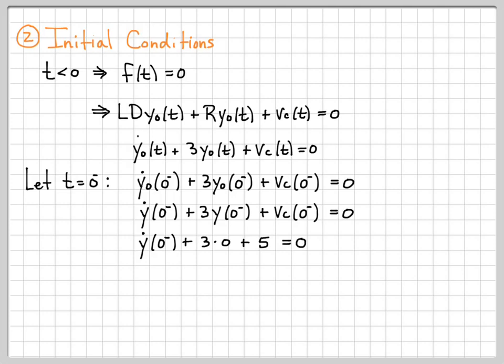So now I have this equation, which tells me if I solve for the derivative of my total response at time zero minus, that it has to equal minus five. So this is another condition that I'm going to need. Basically, by writing down my initial starting equation and evaluating at a time less than zero, for which I knew the input was zero, I was able to tie together some quantities of the total response with the zero input response and solve for another condition on my total response. I didn't have this condition before and now I do.